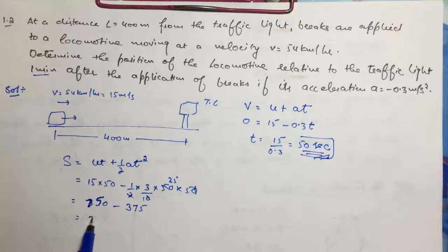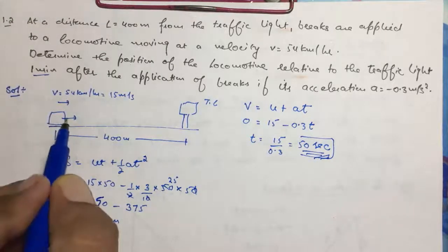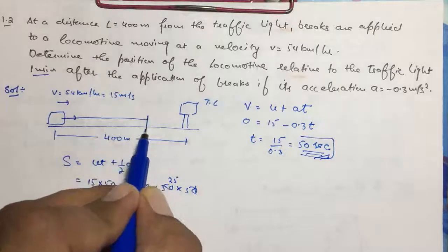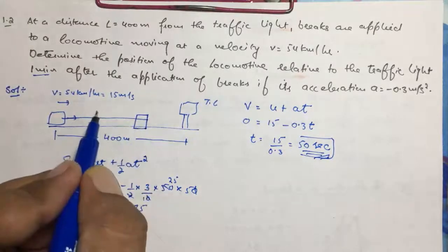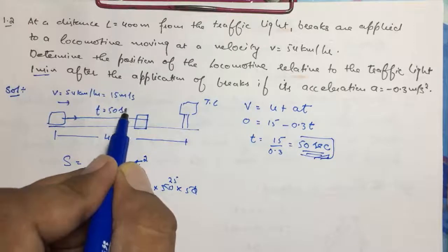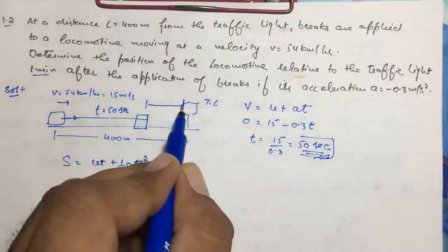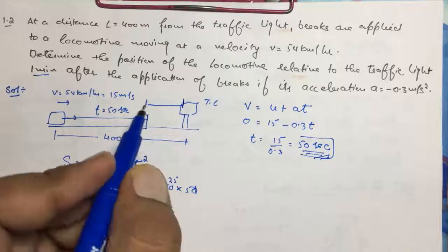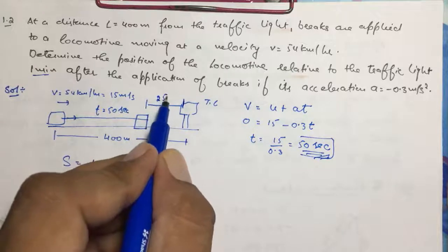So the answer will be 375 meters. This is not actually the answer, this is the displacement by this locomotive and it will come here in just 50 seconds, so this is the distance between traffic lights and locomotive that will be 25 meters.